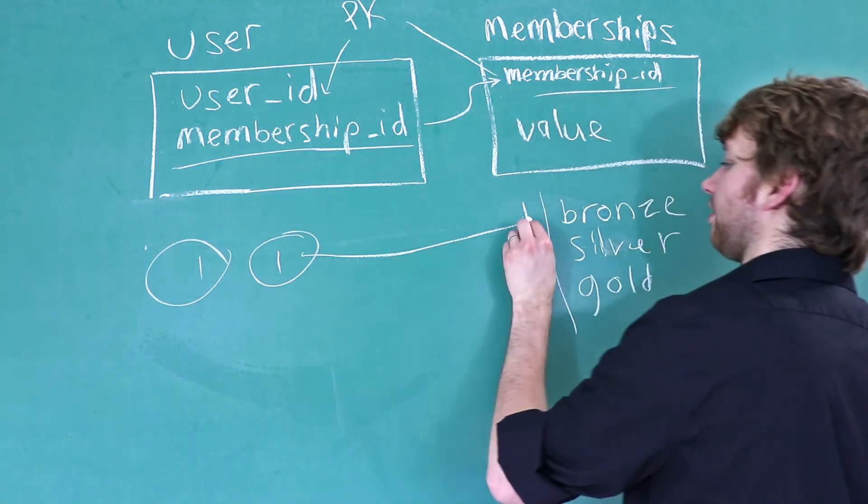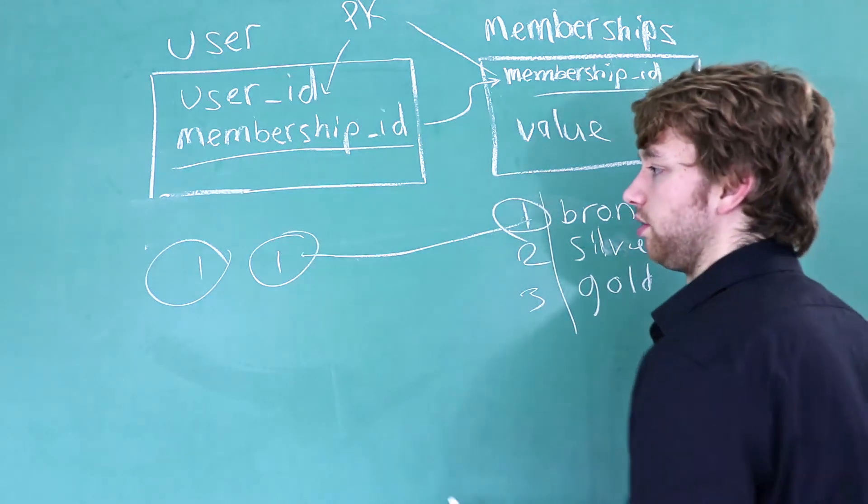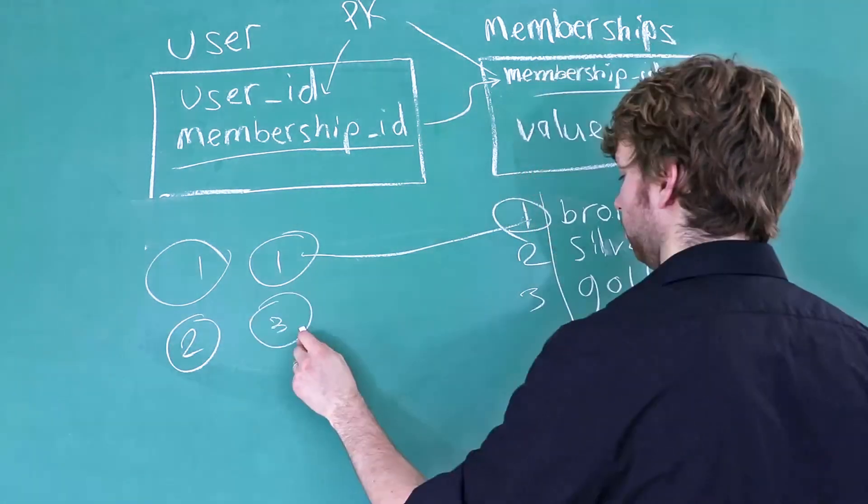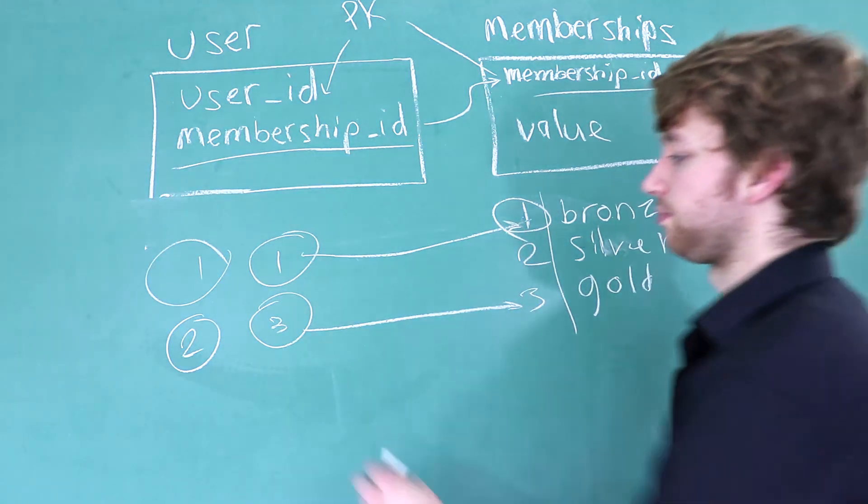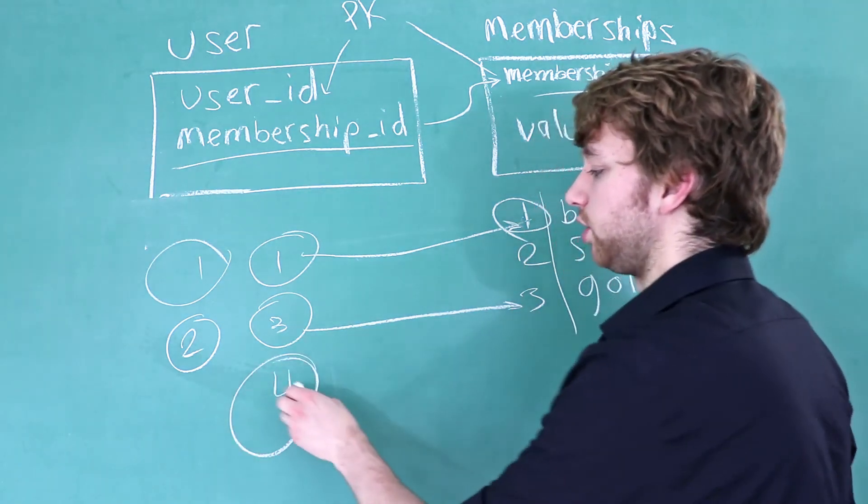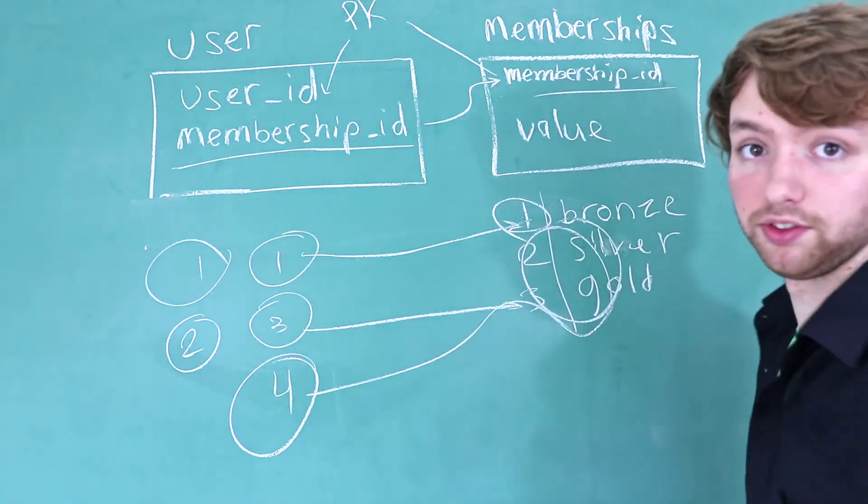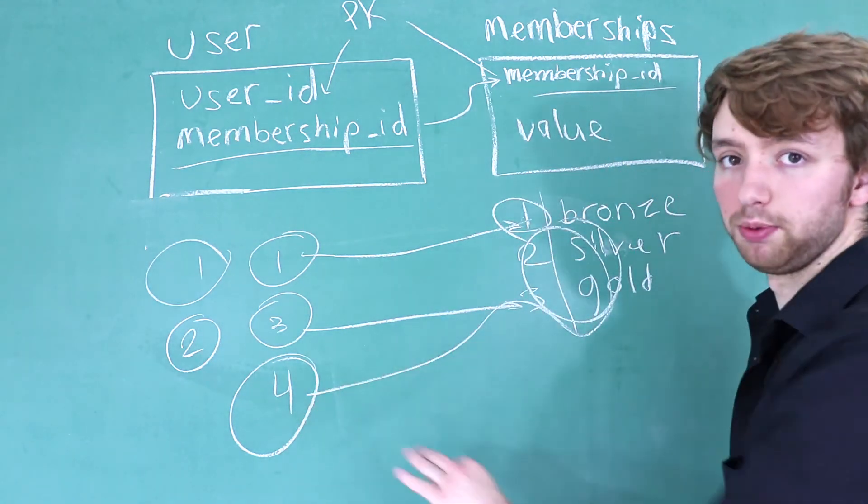Or you could have a user with the ID of 2 reference gold. And it's impossible to put something like a 4, because you see this value here has nowhere to reference. So that would not be allowed to be put into the database. And that's the benefit of having foreign keys is that they add those restrictions.